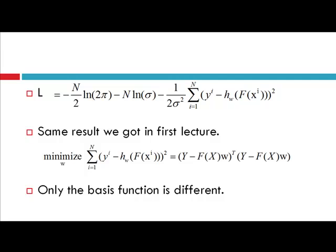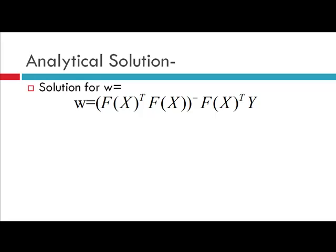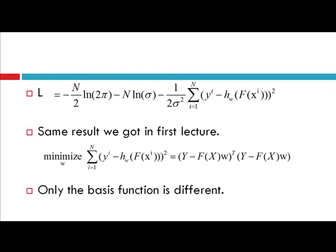Comparing this with the first lecture, you will see that only the basis function is different. In Lecture 1 we had (y minus Xw)-transpose (y minus Xw), and here we are getting (y minus f(x)w)-transpose (y minus f(x)w). So the analytical solution is w equals (fx-transpose fx) inverse fx-transpose y. For the derivation, go to Lecture 1 and just replace x with f(x) everywhere.